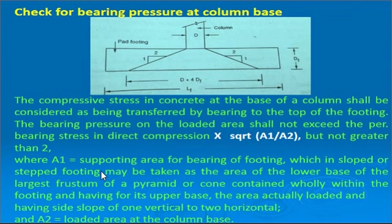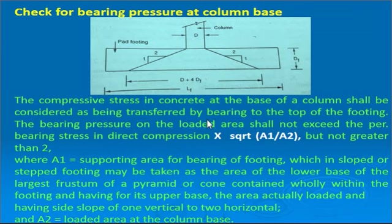Check for bearing pressure at the column base involves two areas: A1 and A2. The compressive stress in concrete at the base of the column is transferred by bearing to the top of the footing. The bearing pressure on the loaded area shall not exceed the permissible bearing stress in direct compression multiplied by √(A1/A2), but not more than 2.